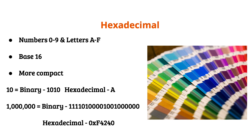Here is another example: one million in binary is 11110100001001000000. However, one million in hexadecimal is 0xF4240. The 0x is the notation indicating this is written in hexadecimal. Hexadecimal is commonly used to represent colors in computer applications and for memory storage locations.